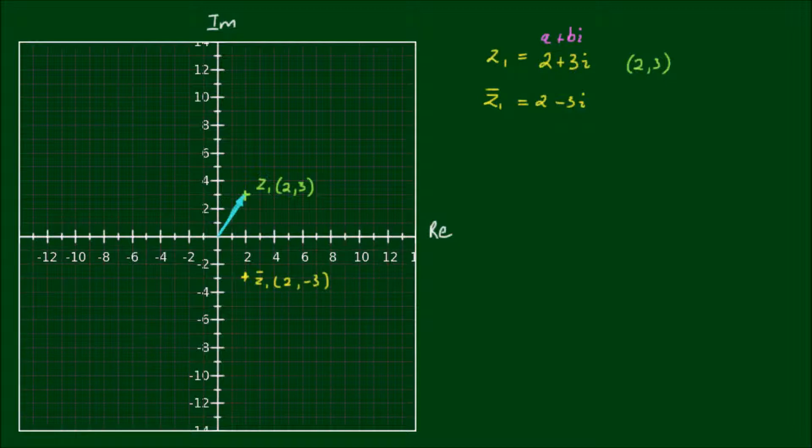And if I draw another vector from the origin to the point, we can note that the complex conjugate is a mirror image of the original vector about the real axis. And this works for any complex number. So basically a complex conjugate is a mirroring of the complex number about the real axis.